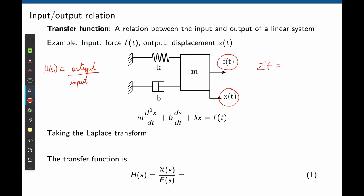By doing the sum of forces equals mass times acceleration, we arrive at a second-order differential equation, covered in lecture 2 — this is step 1. To find the transfer function, we take the Laplace transform. The Laplace transform of m times the second derivative of x is m·s²·X(s). The Laplace transform of b times the first derivative of x is b·s·X(s).